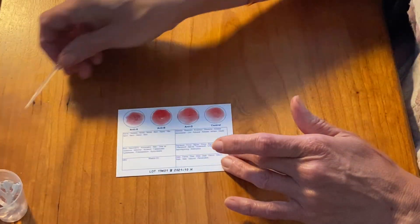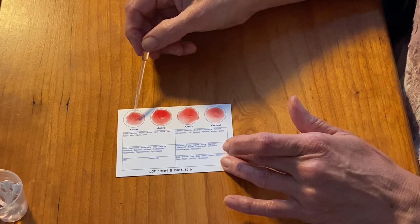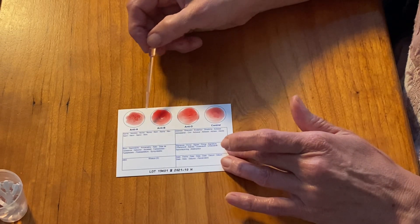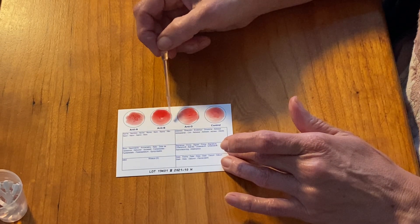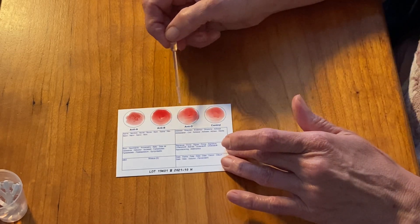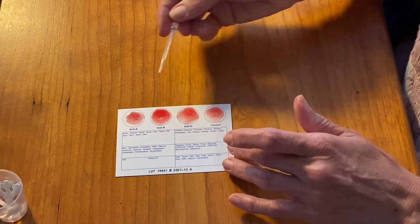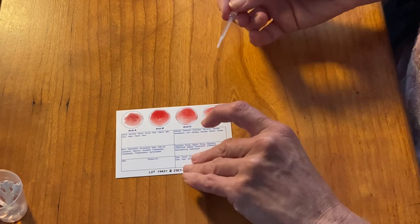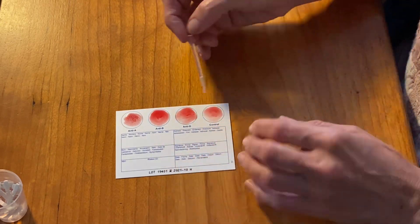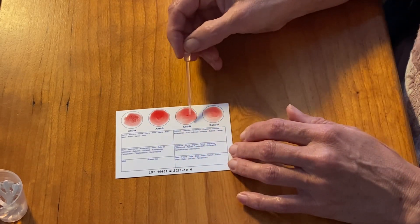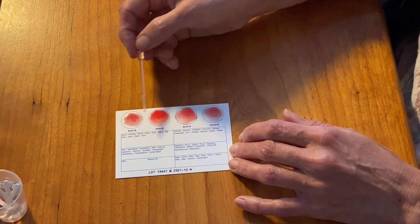As you can see from here, this coagulation here determines that I'm blood type A. This didn't coagulate so I'm definitely not B. Now there is coagulation here. It's not as strong as here, but if I give it a second it's coming up. The coagulation there is definitely not smooth. So I'm A positive.